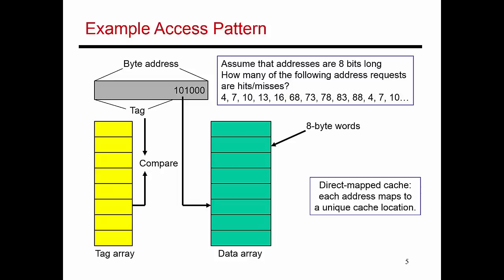So here is an example access pattern. These are the addresses I'm accessing. And the question is, you know, are they going to be cache hits? Are they going to be cache misses? And when I bring a certain block in, what do I evict? And so on. So let's walk through this example in some detail.